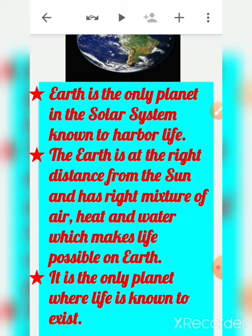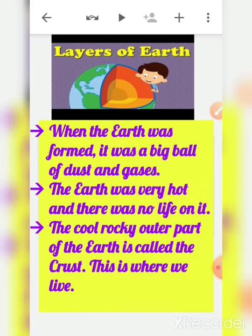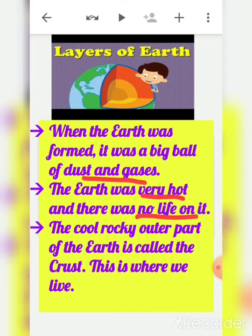Earth is at the right distance from the sun and has the right mixture of air, heat, and water which makes life possible on earth. When the earth was formed it was a big ball of dust and gases, very hot with no life on it. As the years passed, the outer part of the earth cooled down.